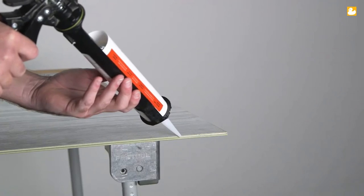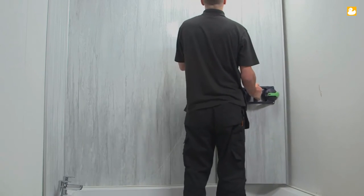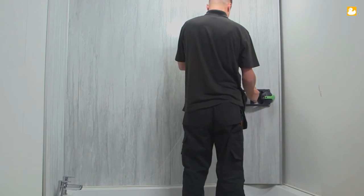Affix the corner trim to the cut panel edge using sealant. Apply a small bead of sealant to the shoulder of the tong edge. Then locate the tong edge into the groove edge of panel 2, at a shallow angle to the wall.